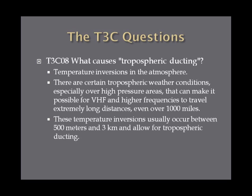What causes tropospheric ducting? The answer is temperature inversions in the atmosphere. There are certain weather conditions in the troposphere, especially over high-pressure areas, that can make it possible for VHF and higher frequency to travel extremely long distances, even over 1,000 miles. Picture two layers of cold air sandwiching a layer of warm air. Your VHF signal hits that duct of warm air and just basically bounces around — it can go up to 1,000 miles. These temperature inversions usually occur between 500 meters and 3 kilometers above the air surface.